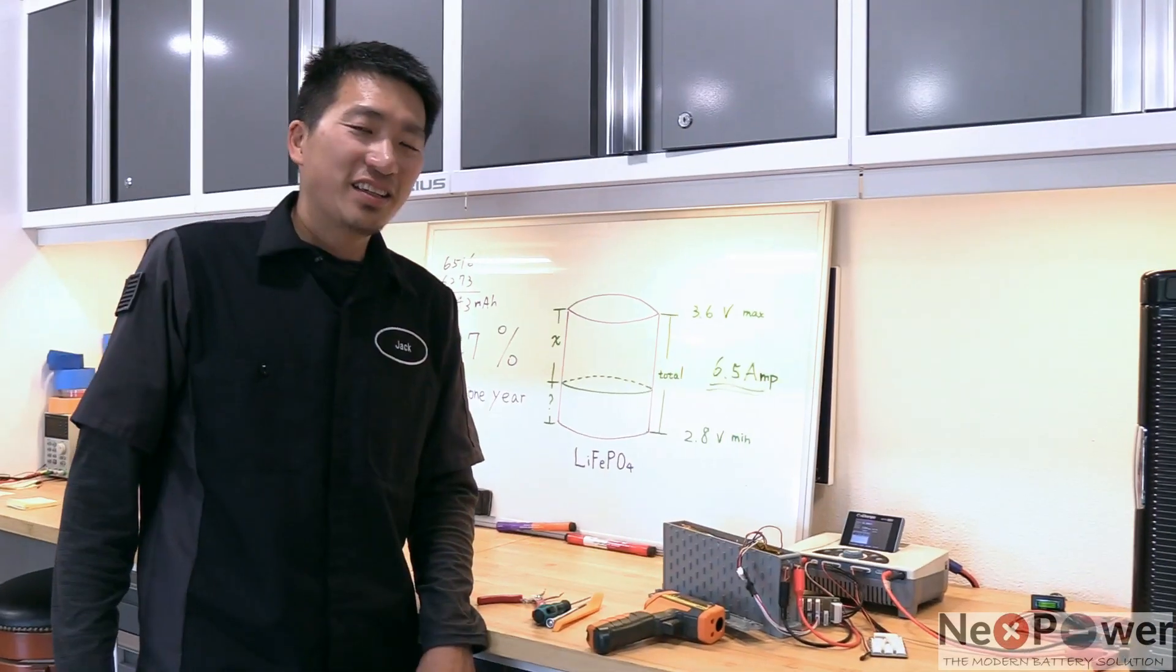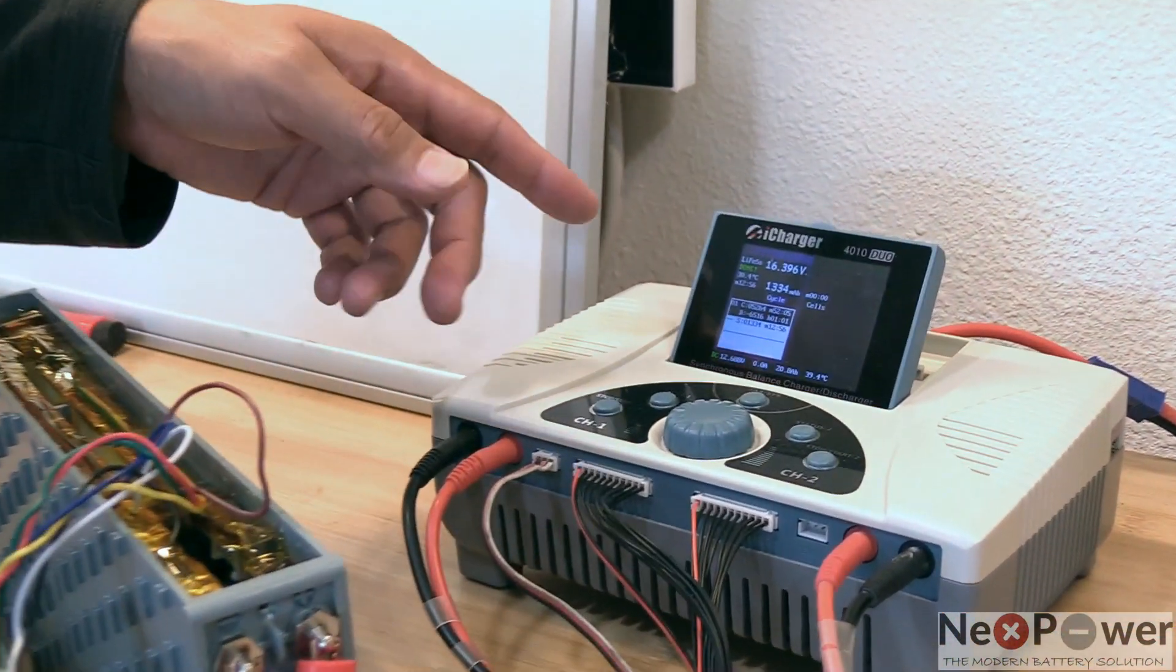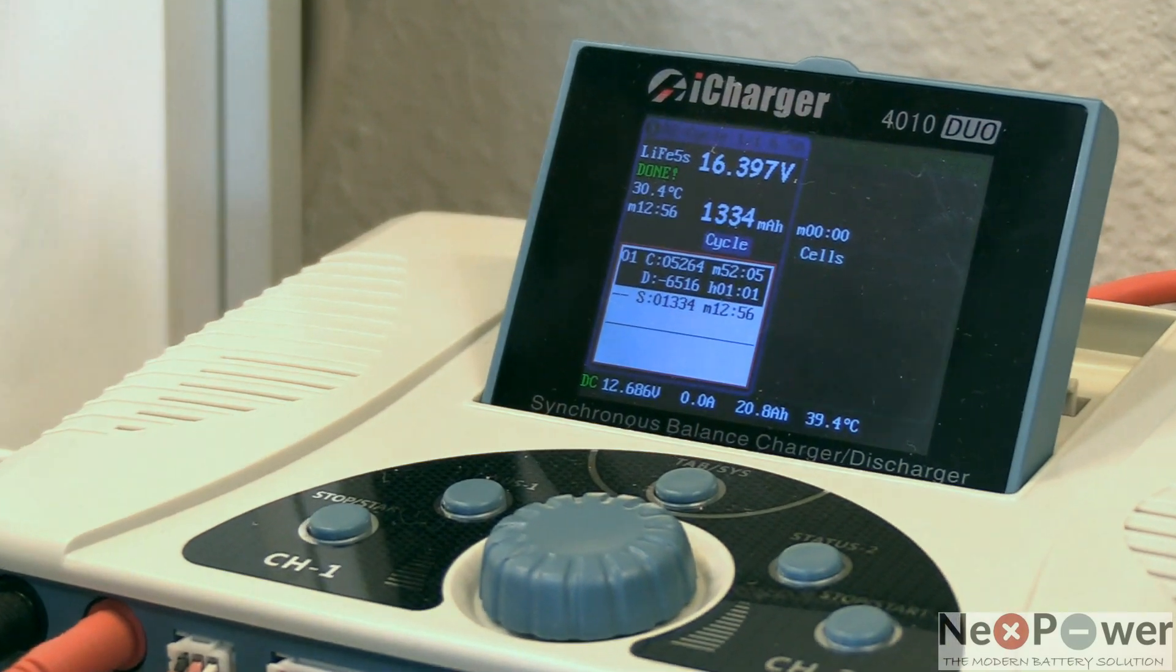And finally, the result is finished, and let's take a look at this brand new lithium blade. It finished at a score of 6,500 milliamp, brand new as expected.